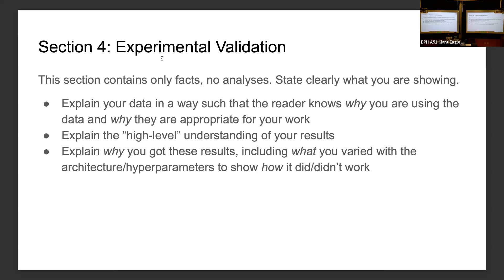Next is the experimental validation section. Once you are done with your experiments, include all results in one particular section. Include all graphs, tables, metrics, and all results you have got. You don't necessarily need to analyze the results here — just compare your metrics alongside the baseline. The analysis part will come separately, but for experimental validation, include all the facts you obtained from your experiments.